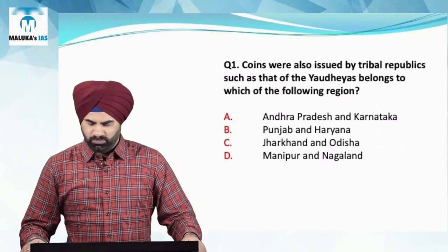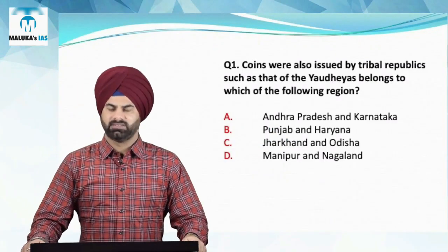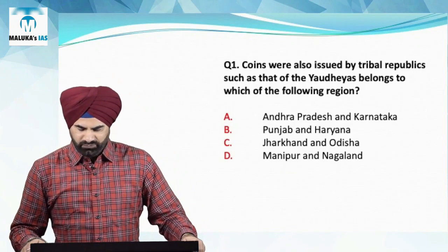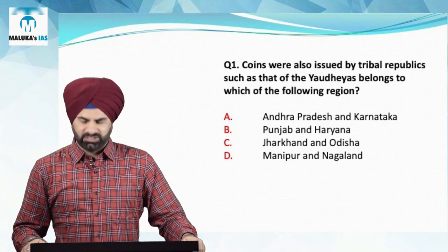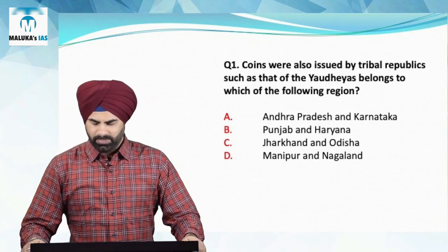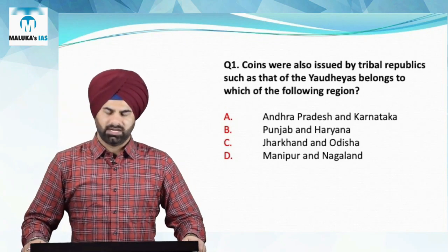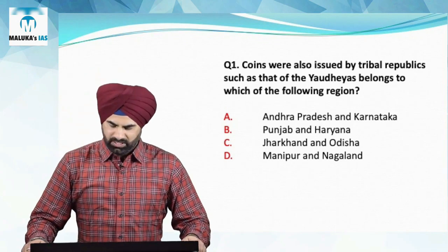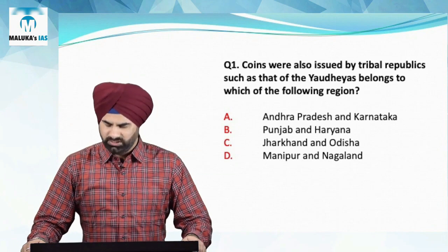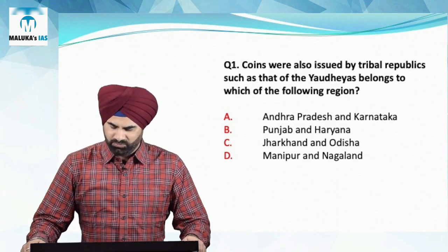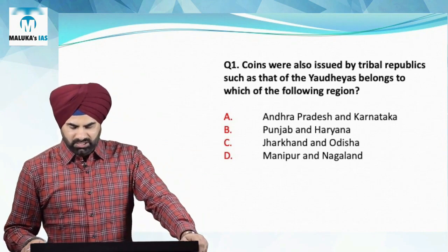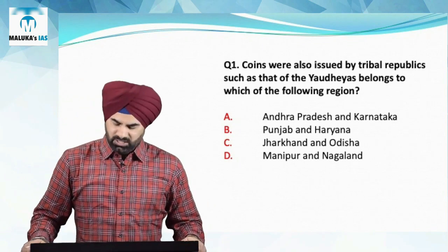Coins were also issued by tribal republics such as that of the Yohidiyas. This belongs to which of the following regions? The options given are: A) Andhra Pradesh and Karnataka, B) Punjab and Haryana, C) Jharkhand and Odisha, and D) Manipur. The answer for the above question is Punjab and Haryana — B is the answer.